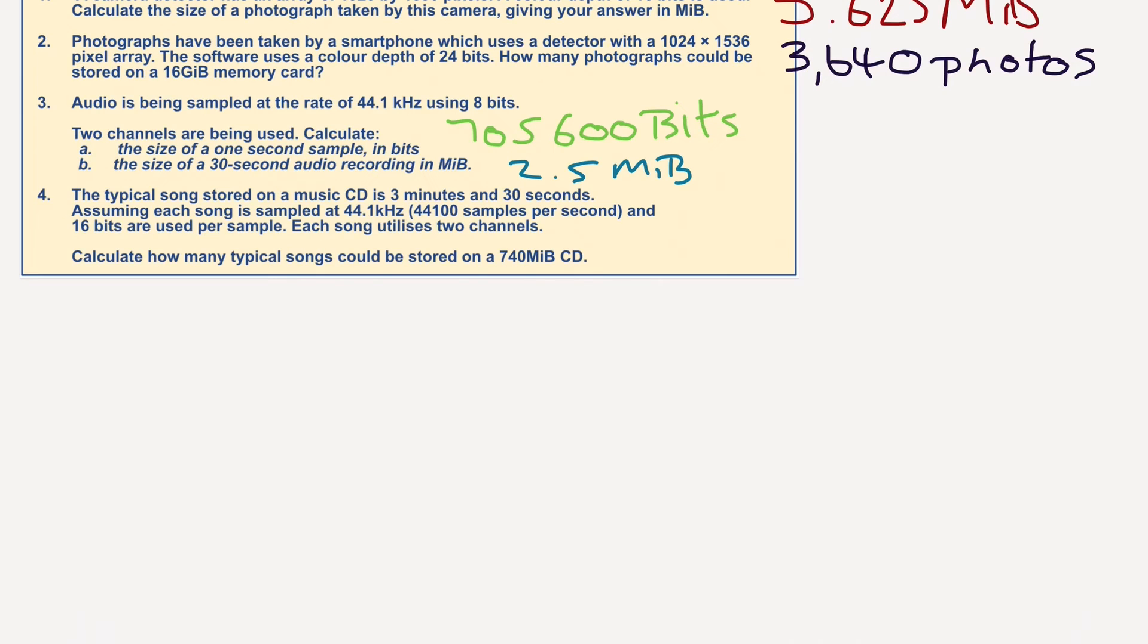And finally, question four. We have a typical song stored on a music CD is 3 minutes and 30 seconds long. Assuming each song is sampled at 44.1 kilohertz, 44,100 samples per second, and 16 bits are used per sample, each song utilizes two channels. Calculate how many typical songs could be stored on a 740 megabyte CD. Let's do the multiplication first. We need to go 44,100 multiplied by 16 bits multiplied by 210.